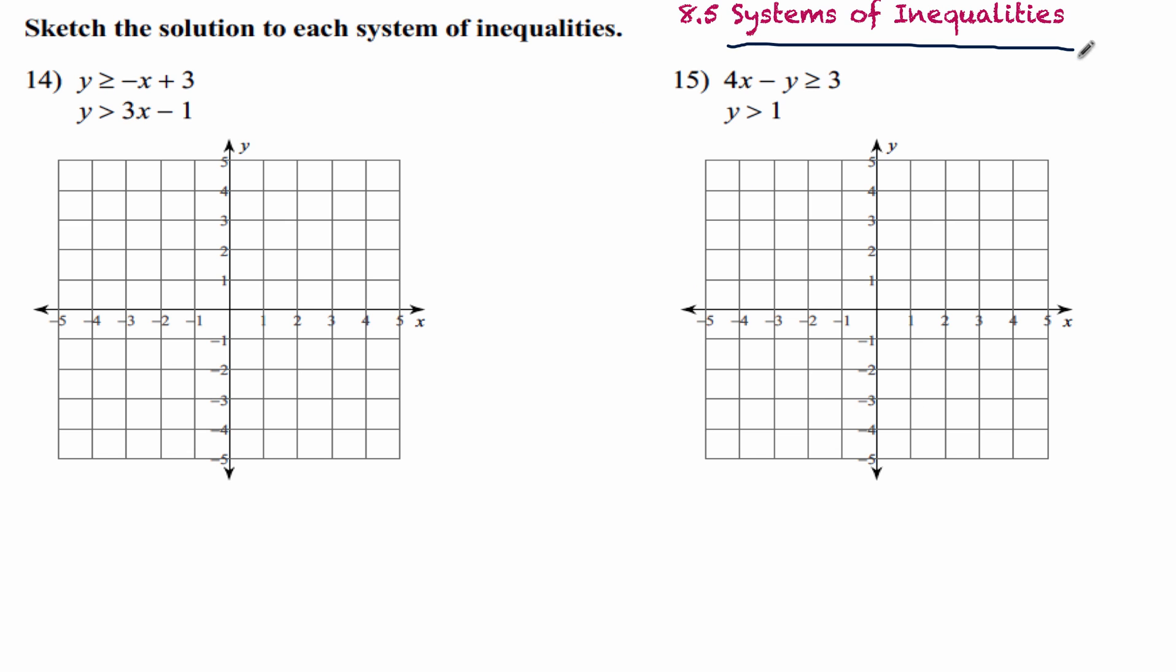Last section is 8.5, systems of inequalities. What we're going to do is graph each one of these inequalities on each problem here. And we're going to find the region that is shaded twice. Let me show you what that means. So number 15, we get y is greater than 1. So think of the line y equals 1. That is this line right here. But because it's not equal to, it's just greater than, we're going to use a dotted line. So y is greater than 1. Which numbers are greater than this line? The ones on top or the ones underneath? That's easy. That's the points on top of the line. So that's shading the first one.